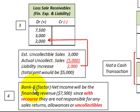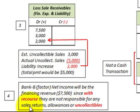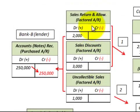Finally, for Bank B's net income: their financing revenue was 3% of $250,000, which equals $7,500. Since this is a with-recourse arrangement, Bank B is not responsible for any sales returns, allowances, or uncollectibles. Therefore, their total net income is simply the $7,500 financing charge they collected from Corporation A on the $250,000 of factored accounts receivable.